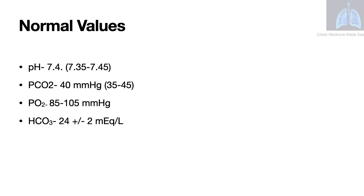Let us look at the normal values of human blood. The normal human blood pH is 7.4 and can range between 7.35 to 7.45. The normal partial pressure of carbon dioxide is 40 mmHg and can range between 35 to 45 mmHg. The normal partial pressure of oxygen is 85 to 105 mmHg. We will talk about the meaning of partial pressures in a later video. The normal level of bicarbonate is 24 ± 2 mEq per liter, that is 22 to 26 mEq per liter.